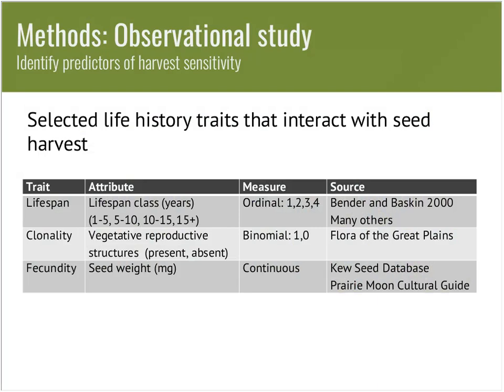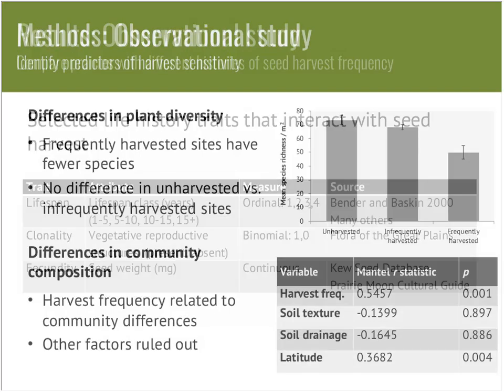To predict harvest sensitivity, I looked at life history traits that reflect how reliant plants are on reproduction from seed. I chose three traits pertinent to seed harvest: lifespan, clonality, and fecundity, and assigned trait values to the 60 most common species using published literature and trait databases. Lifespan attribute classes were approximately one to five years, five to ten years, ten to fifteen, and more than fifteen years. Clonality was considered either present or absent based on vegetative reproductive structures. Fecundity was estimated using seed weight taken from trait databases.